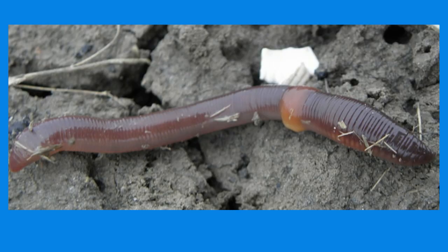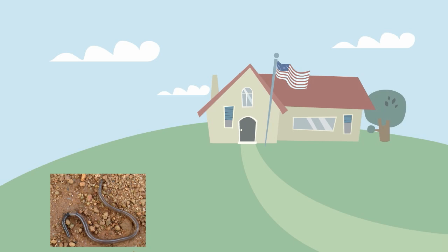Probably the most common annelid is the earthworm. There are more than 27,000 kinds of earthworms. They range from a half inch in length to the largest recorded earthworm ever, which was 22 feet. Earthworms exist in great numbers and it is estimated that in a single acre of soil there may be up to a million earthworms.